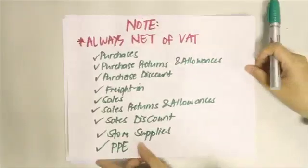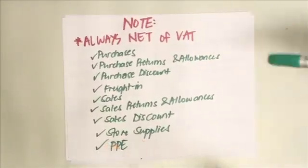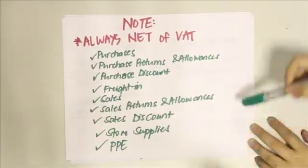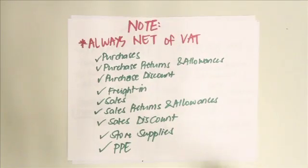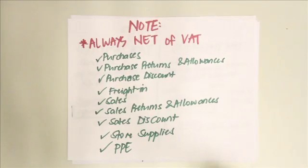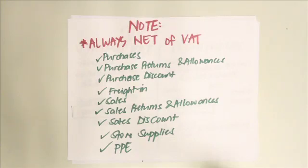It's important to note that certain account titles should always be presented net of VAT, meaning VAT should always be removed from these amounts. These accounts include: purchases, purchase returns and allowances, purchase discount, freight in, sales, sales returns and allowances, sales discount, store supplies, and property, plant and equipment (PPE).